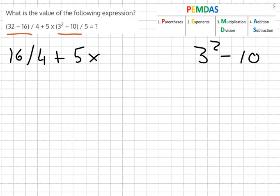So we start off with the exponent of 3 squared which equals 9 minus 10 which equals minus 1. So it becomes 5 times minus 1 over 5 equals.